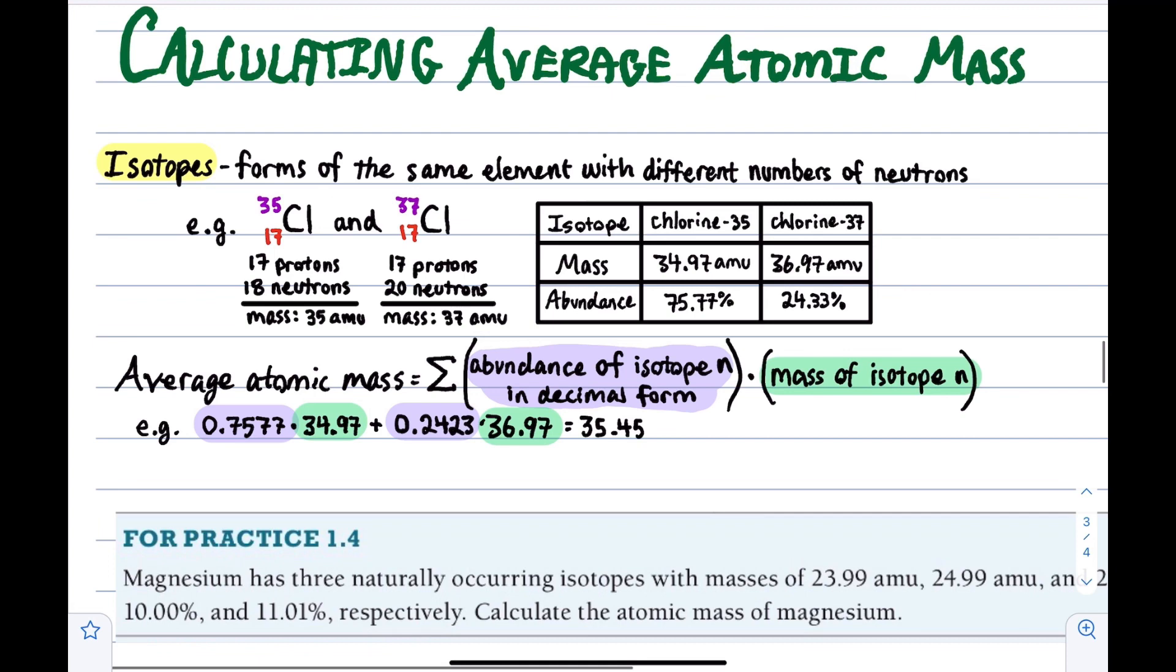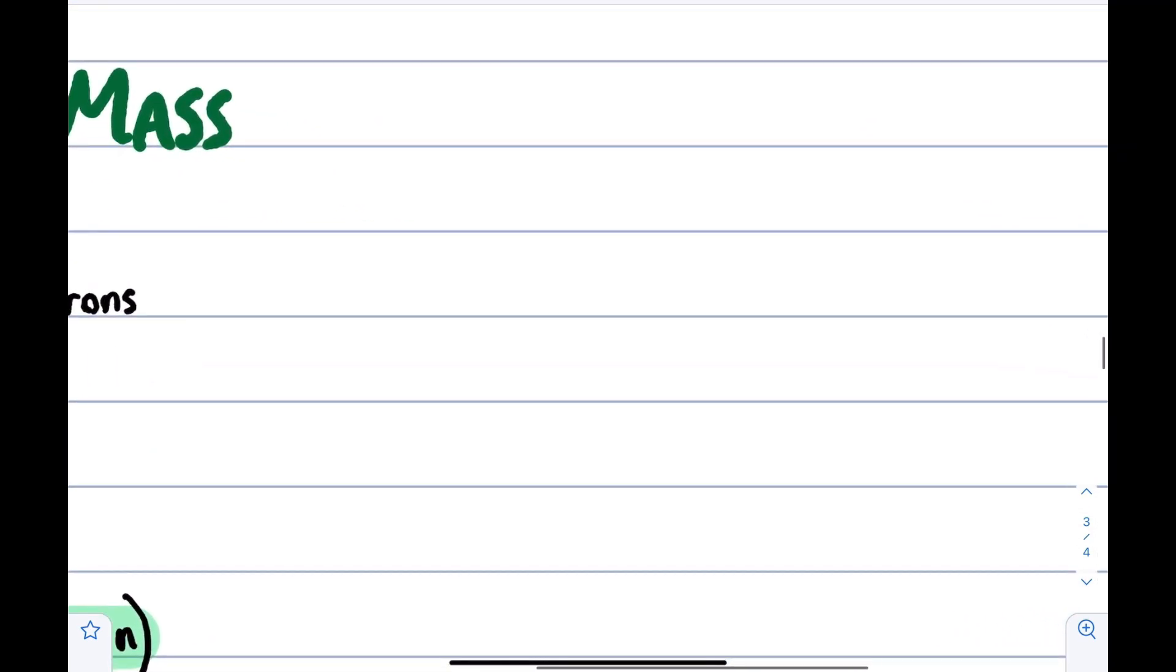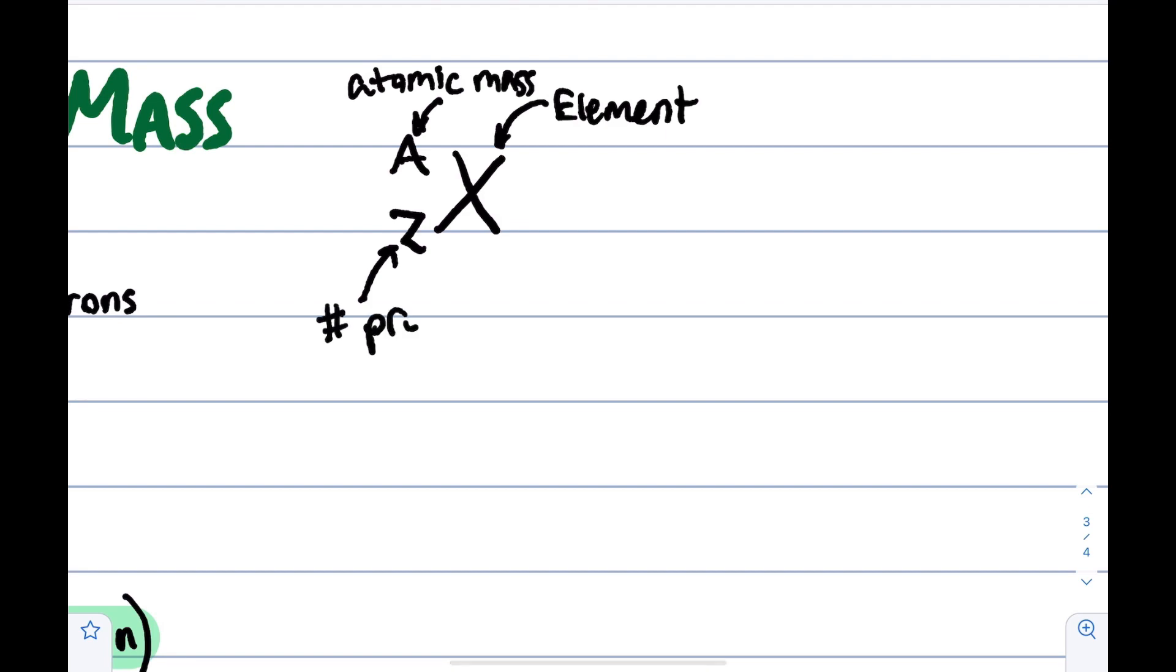Usually when we write these things out, there are a couple notations that we can use. We can use this one, and in this one, X is our element, for example it could be chlorine. A is our mass, our atomic mass. And Z is our nuclear charge, which is a fancy way of saying number of protons.